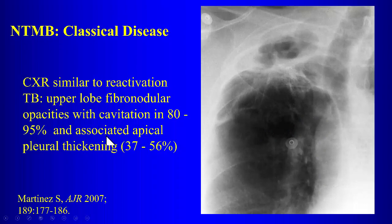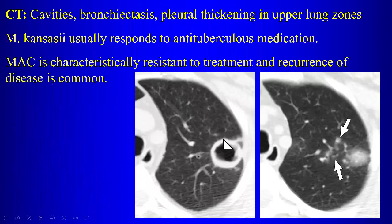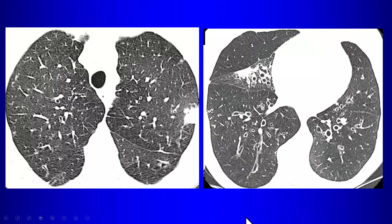Classical NTM disease looks like TB with upper lobe distribution of fibrosis and cavitary disease, can have bronchogenic spread and tree-and-bud nodules, tends to be resistant to treatment, and recurrence is very common. If you have something that looks like TB but is not TB, NTM is in your differential.